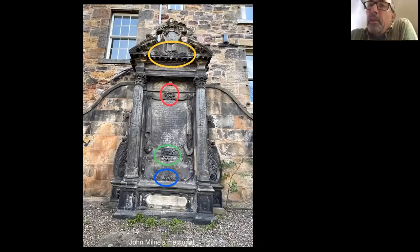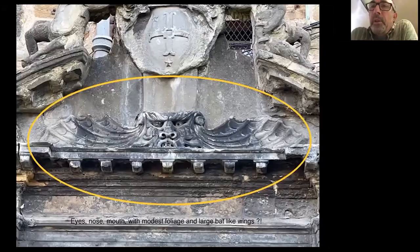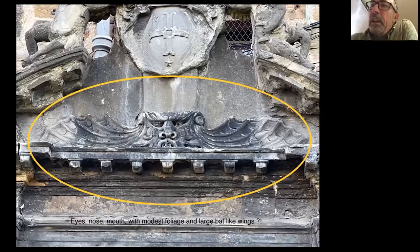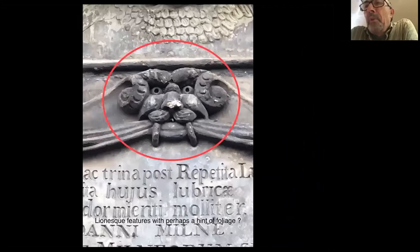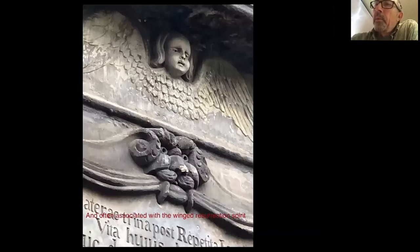Looking at those four faces: the one at the top clearly has eyes, a nose and a mouth, but there is also modest foliage. The distinctive feature here is the very large bat-like wings. The foliage I've outlined in green is often quite subtle. Further down on that monument we see a clearly lioness face, but there are scrolls - are those a hint of foliage? And its association with the winged resurrection spirit is something we commonly come across.